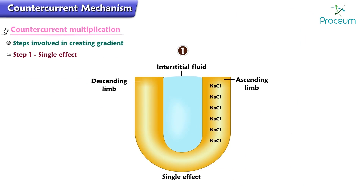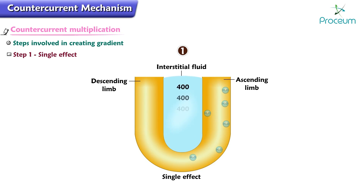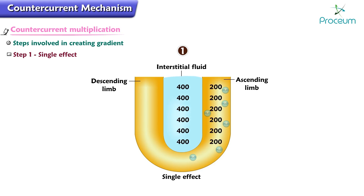Step one is the single effect. As sodium chloride is reabsorbed out of the ascending limb and deposited in the surrounding interstitial fluid, water is left behind in the ascending limb. As a result, the interstitial fluid osmolarity increases to 400 milliosmoles per liter, and the fluid in the ascending limb becomes more dilute, at 200 milliosmoles per liter. Fluid in the descending limb equilibrates with the interstitial fluid, and its osmolarity also becomes 400 milliosmoles per liter.